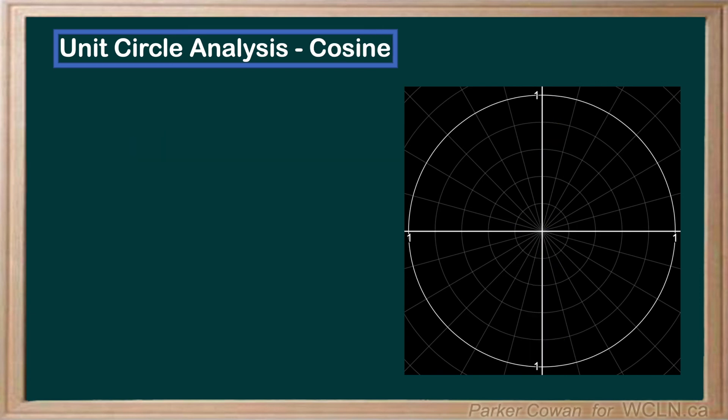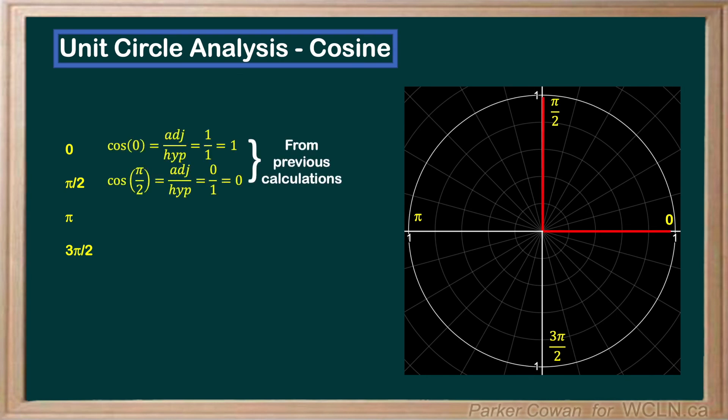Let's see if we can use our observations from our sine calculations in combination with our previous calculations of cosine of 0 and cosine of pi over 2. It appeared that sine was oscillating from 1 to 0 to negative 1 and back to 0 again. Assuming cosine is following a similar pattern, can you guess what cosine of pi and 3 pi over 2 are?